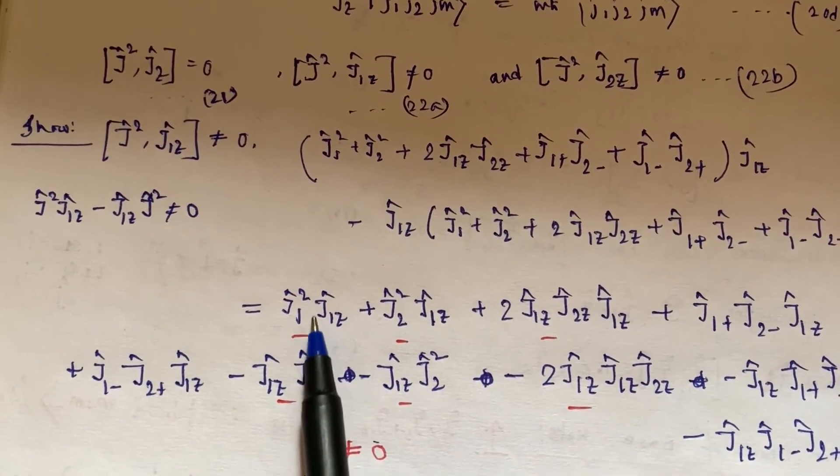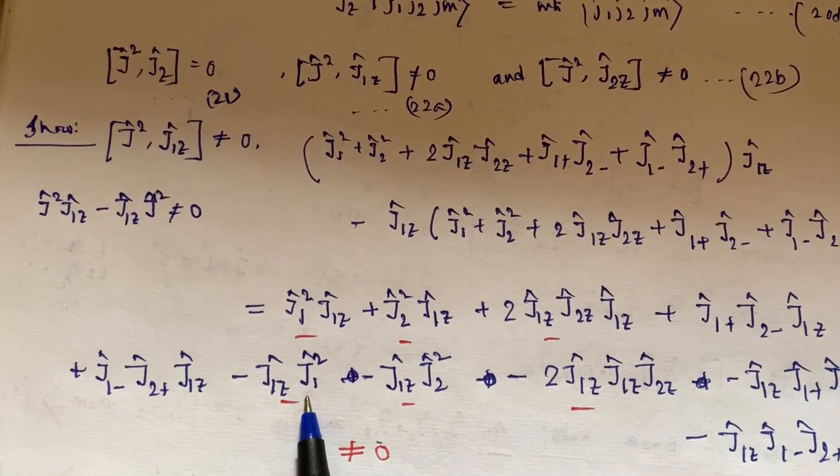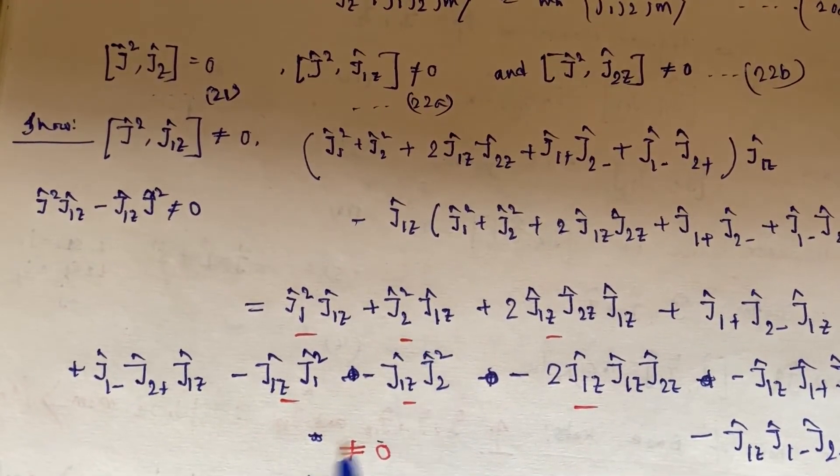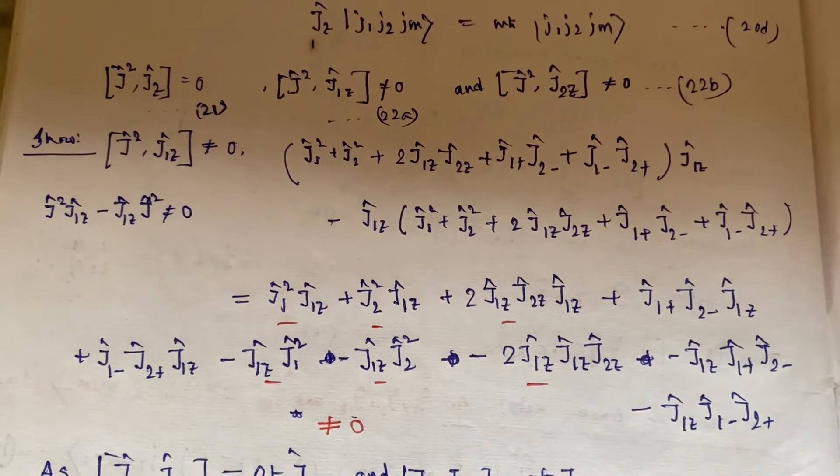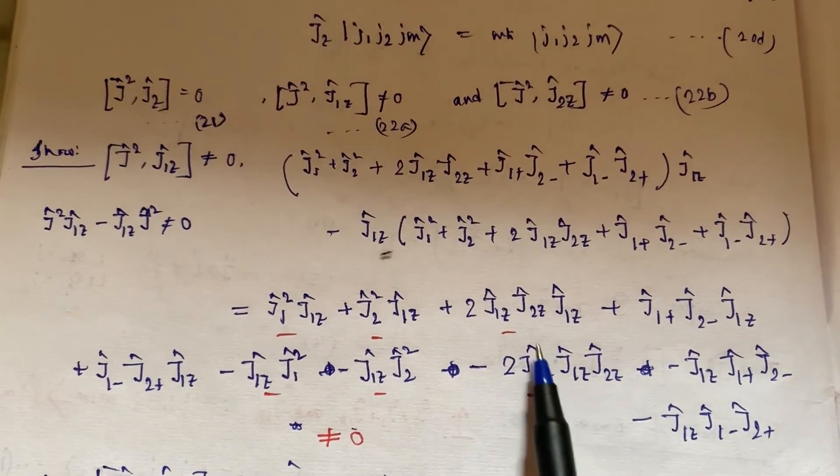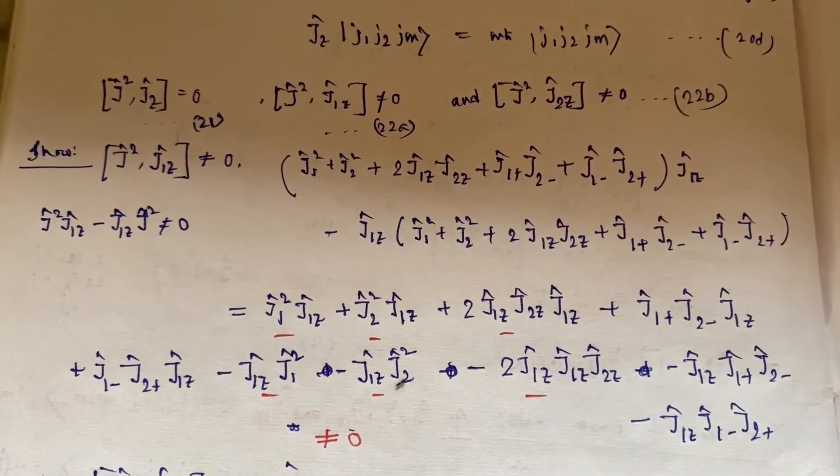Now this is J₁² and J₁z, and as J² commutes with Jz, so definitely J₁² commutes with J₁z. So this term and this term will cancel out. Similarly this one and this one will cancel out. Similarly this one and this one will cancel.